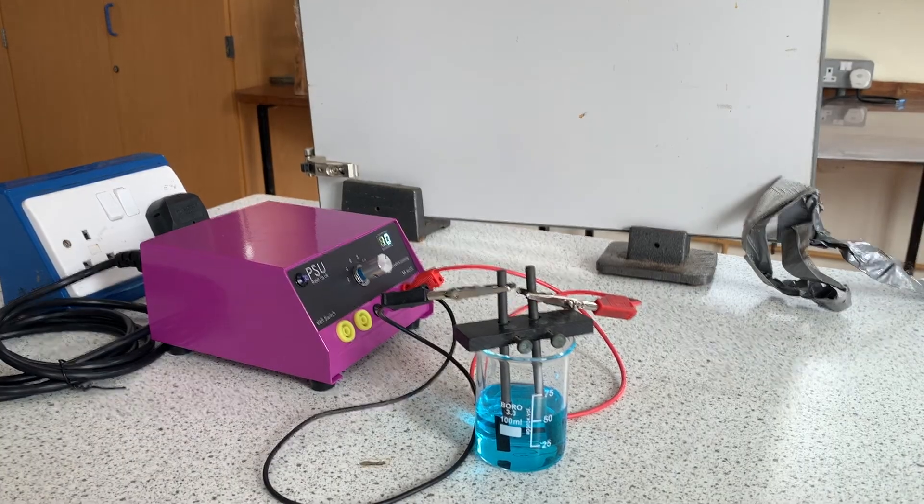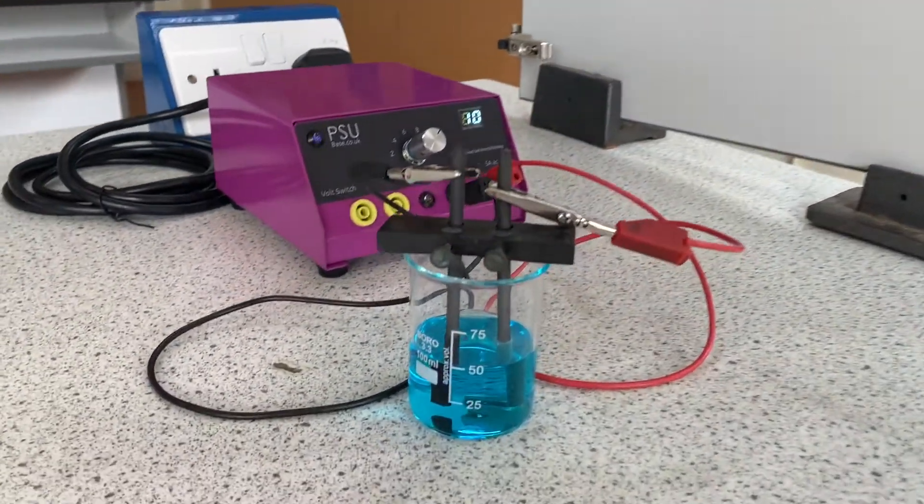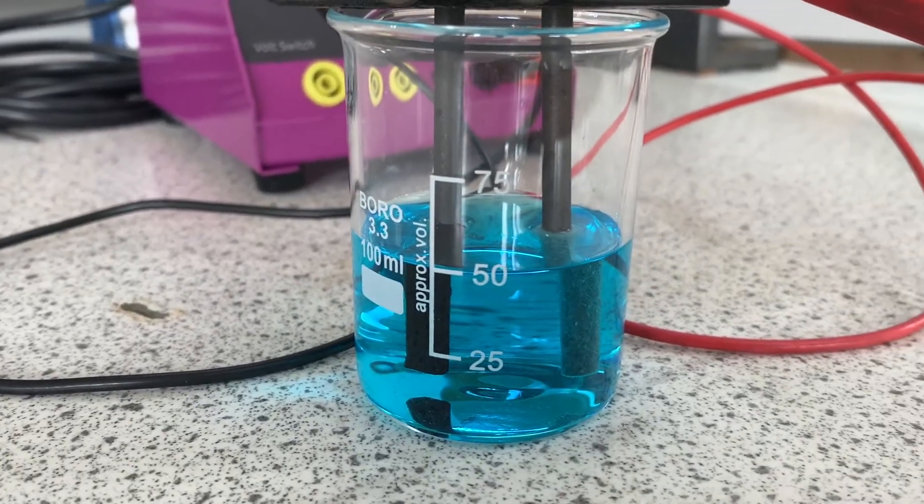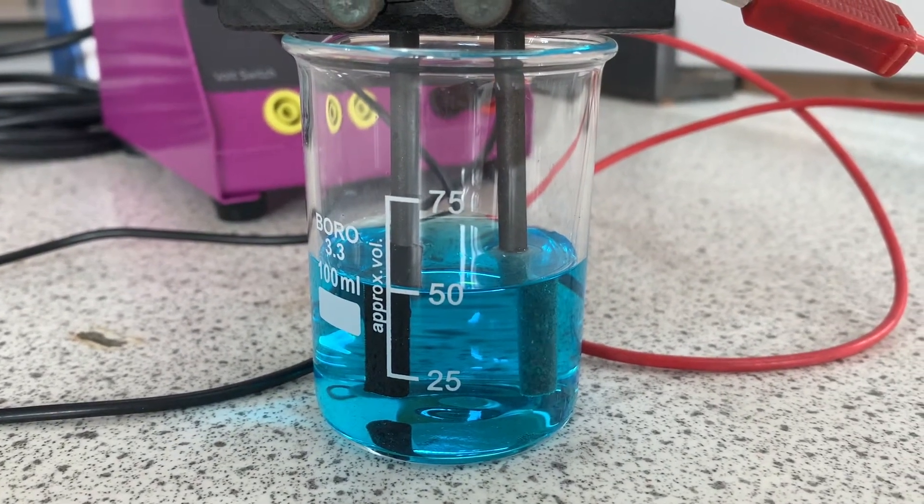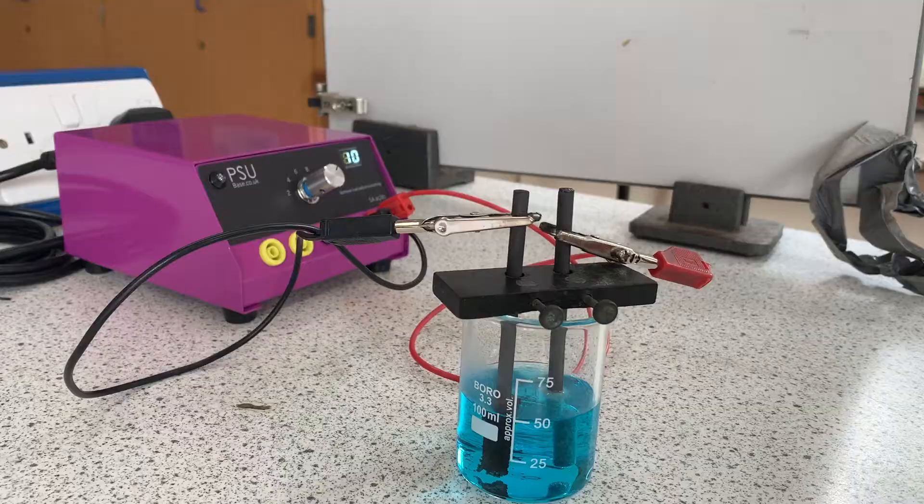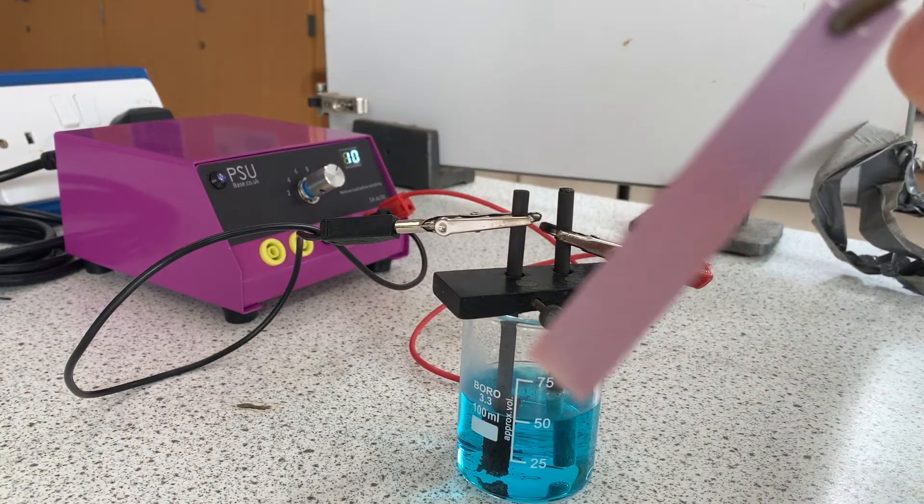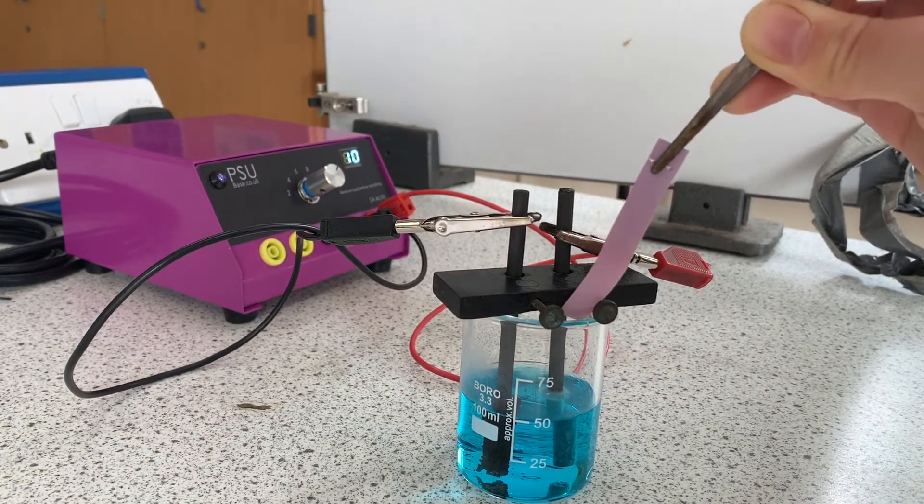If we zoom in on this you can see there's fizzing at the positive electrode, this means a gas is being produced. Here I'm taking damp blue litmus paper and I'm holding it by the gas.